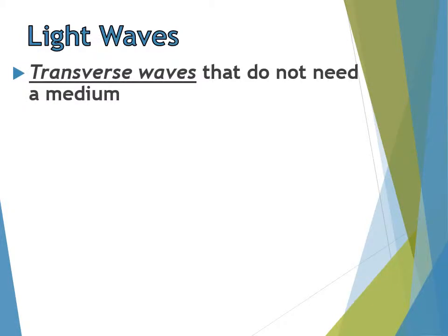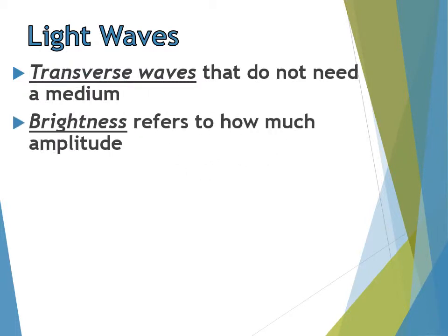So what are light waves? Light waves are actually transverse waves that do not need a medium in order to transfer energy from one place to another. With transverse waves, they vibrate perpendicular to the direction that the energy goes. Most waves need a medium to transfer, like sound, which has to have air. But light does not need a medium — it can pass through a vacuum, which makes it very unique.